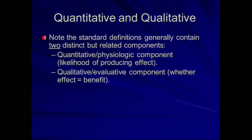What I would like you to note from both of those definitions — from Schneiderman and from policy 1319 — is that these definitions generally contain two distinct but related components. There are two aspects, conceptually, to that which we call futile treatment. There is a quantitative component, essentially a physiologic component, which looks at the likelihood — the probability — of producing an effect: the physiological effect, the general effect of the particular intervention we provide. But in addition to that quantitative component, there is always necessarily, and perhaps more importantly, a qualitative or evaluative component.